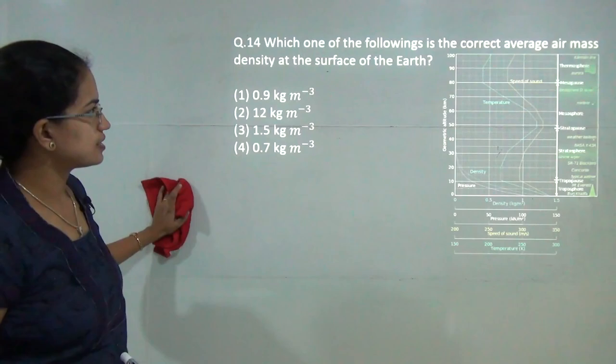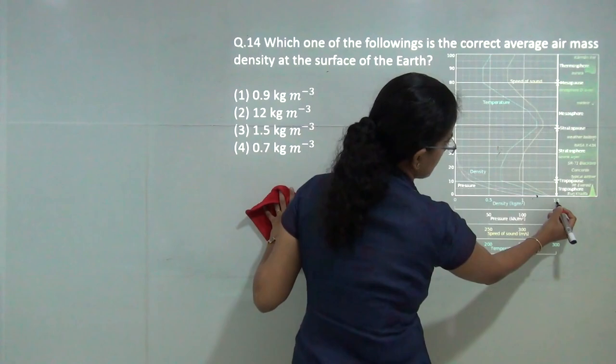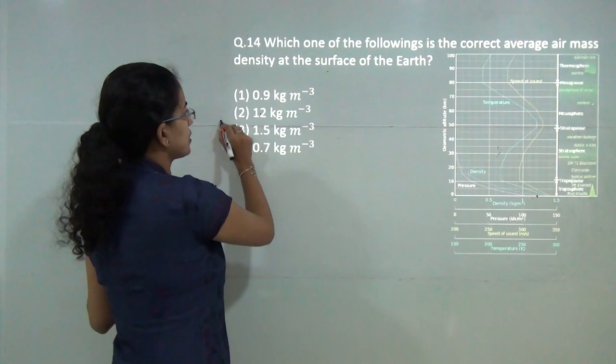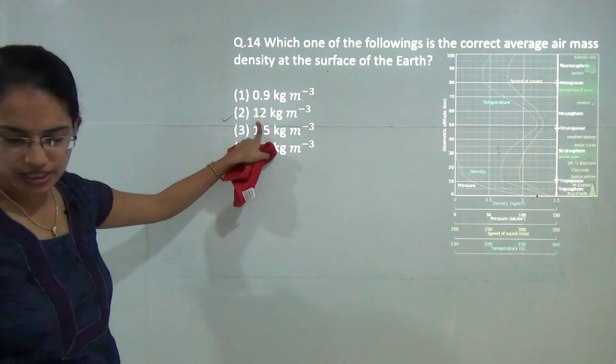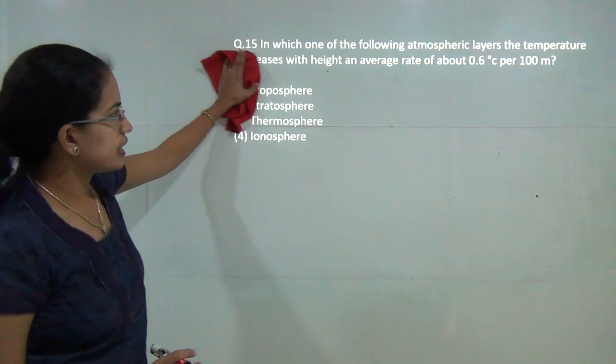Next question: which of the following is the correct average air mass density at the surface of the earth? As you can see at the surface of the earth, this is the curve for the density and this is 1.5 and this is 0, so this is somewhat below 1.5. This would be 1.2 would be the correct answer here. 1.2 is incorrectly typed here, so this would be the correct answer.